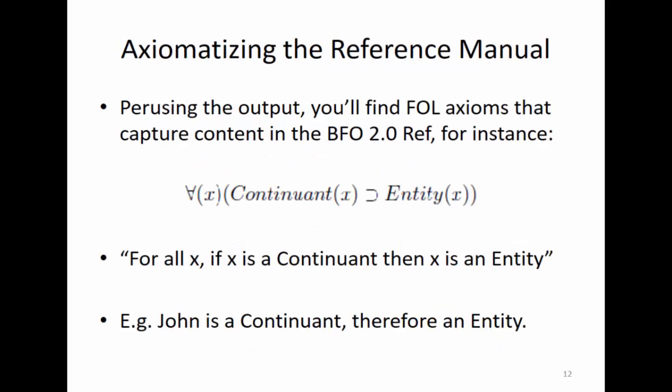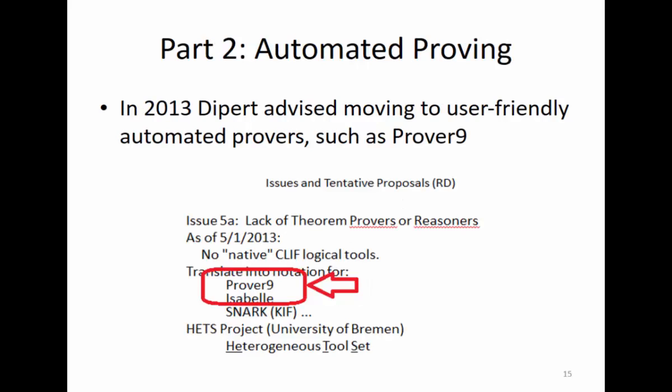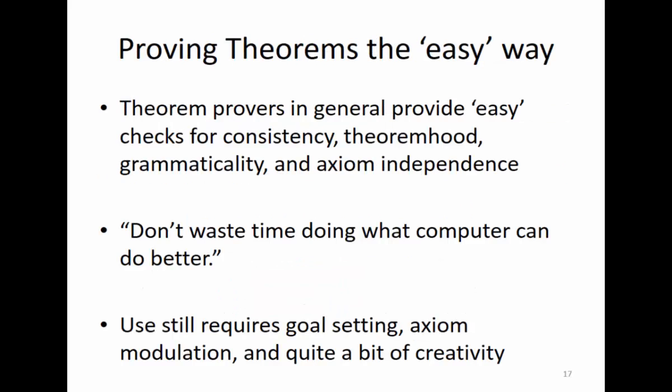I'm going to move on to the interesting stuff. Dr. Dipert in 2013 advised moving to a user-friendly automated theorem prover - or various user-friendly theorem provers such as Prover9. The idea is if you axiomatize BFO and plug it into a prover, you see what falls out. It's a nice way to prove theorems, because doing a lot of first order stuff by hand is boring after a while - you just get tired of proving the same thing. It's like typing 'hello world' when you're learning a language.